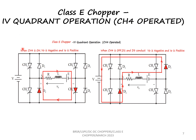Let us now see the operation of the class E chopper in the fourth quadrant. CH4 is operated — it is kept on and then kept off. When CH4 is kept on, the current flows through CH4, D2, and the load, where V0 is negative and current is positive. When CH4 is switched off, the current flows through D2 and D4 through the source. In both cases, the current is positive but the voltage is in the negative direction.